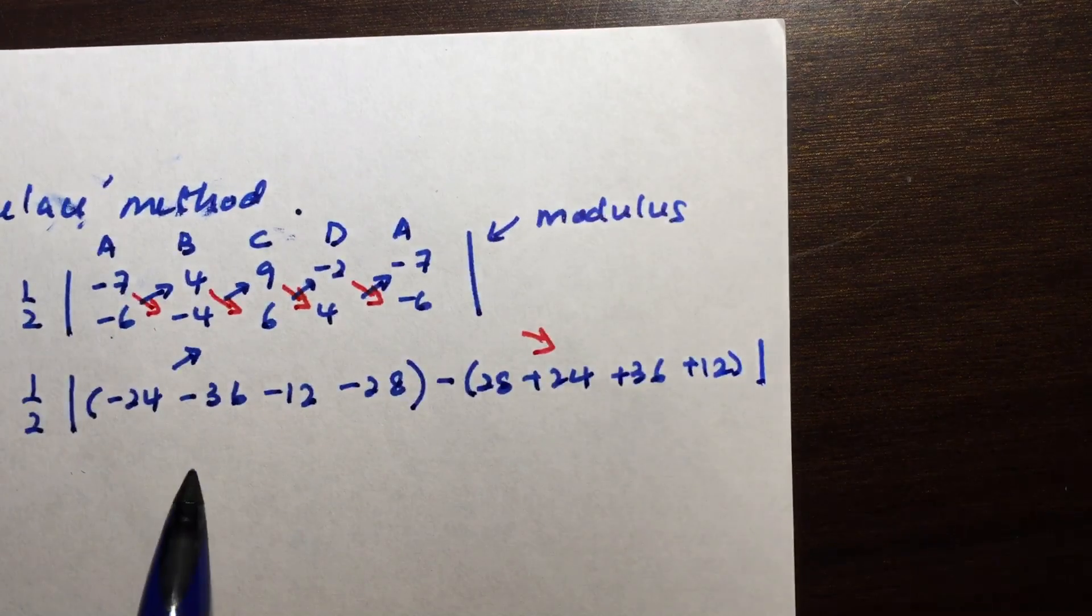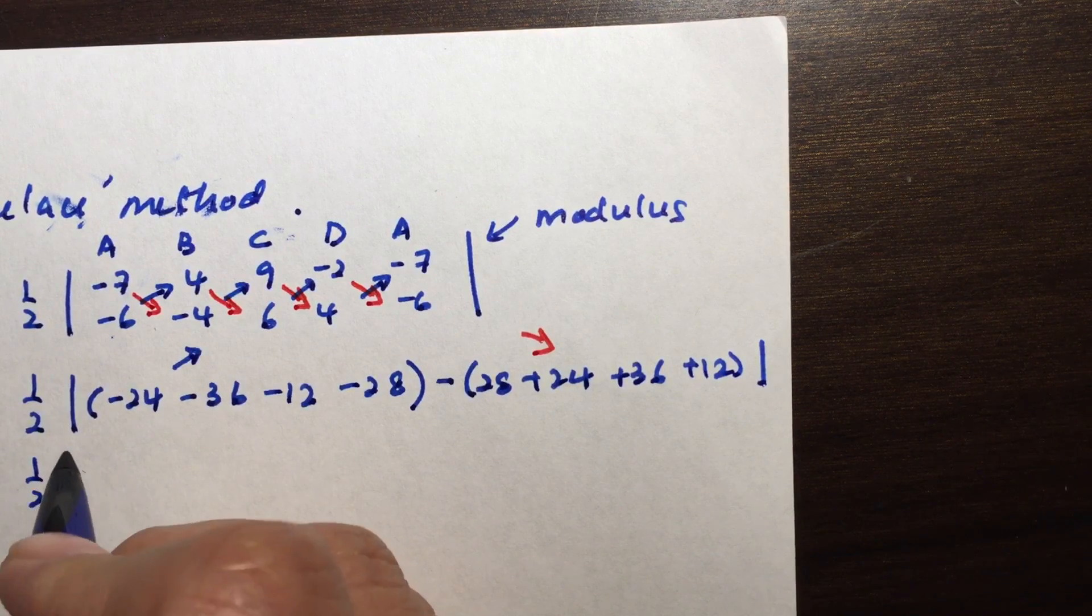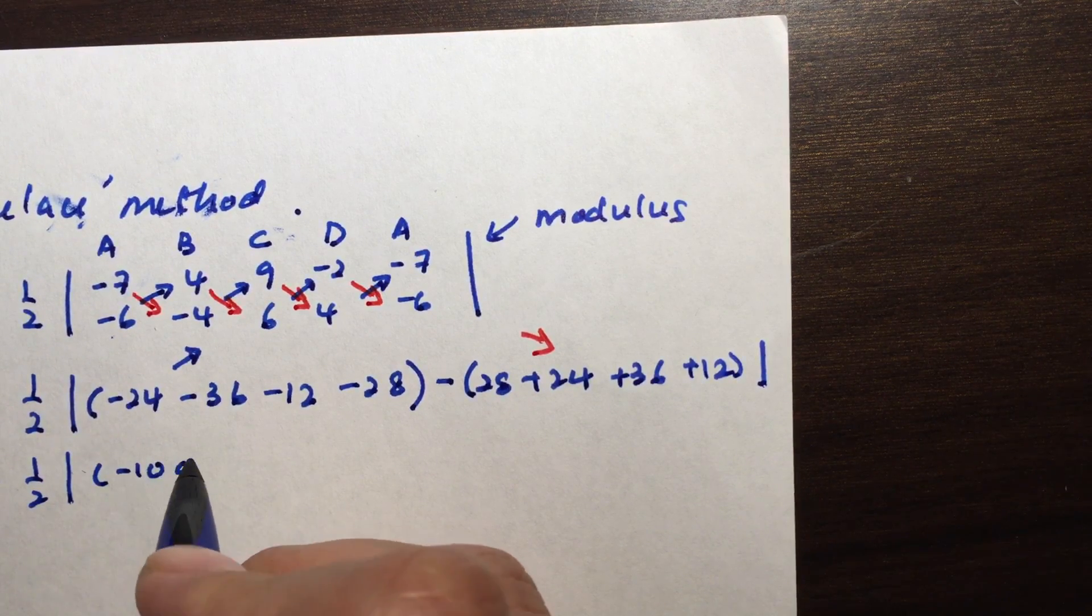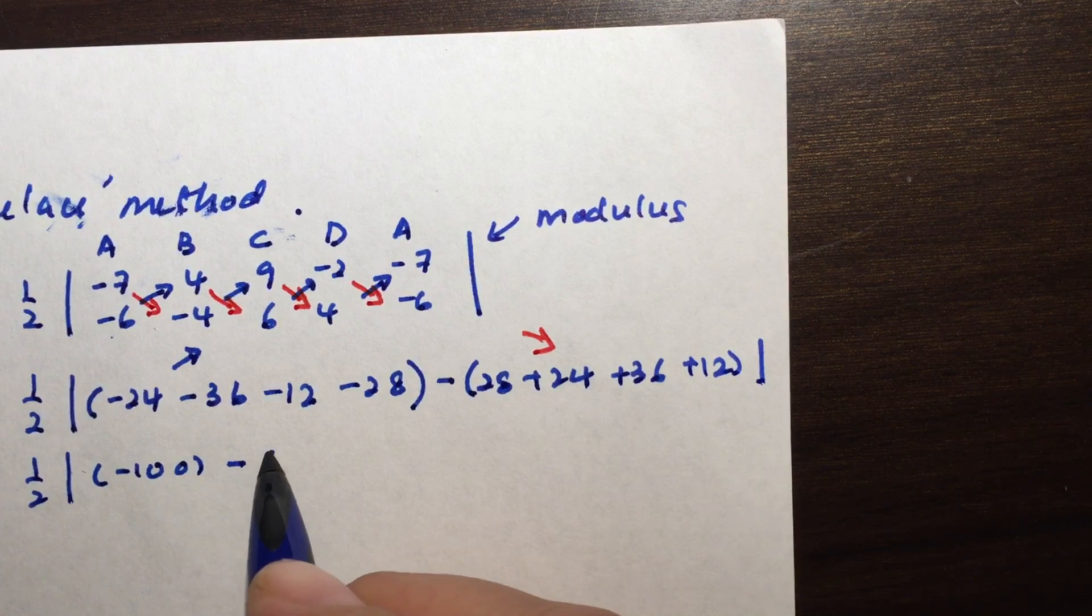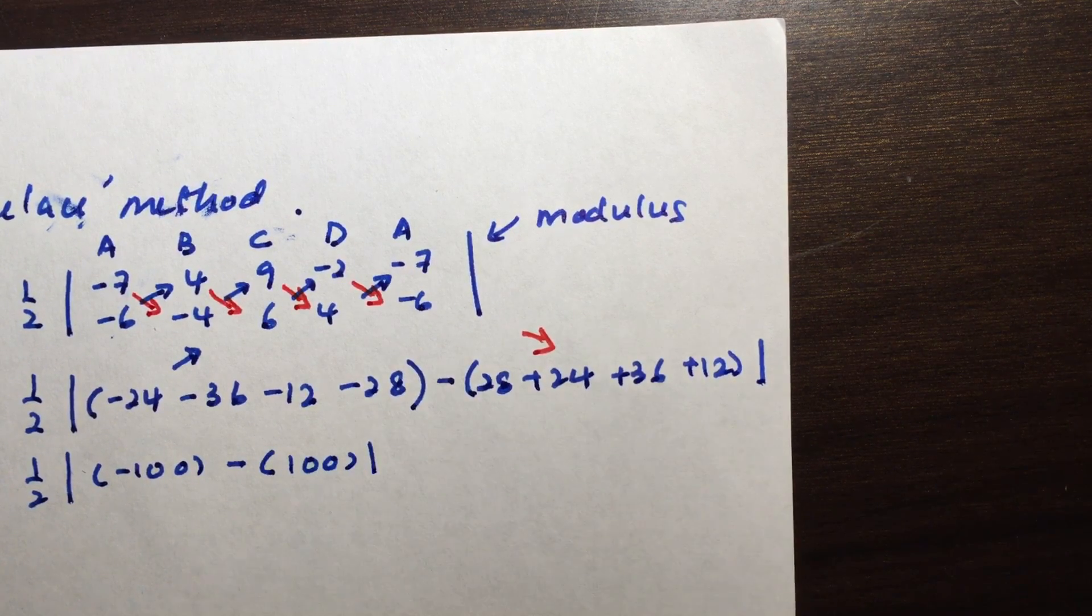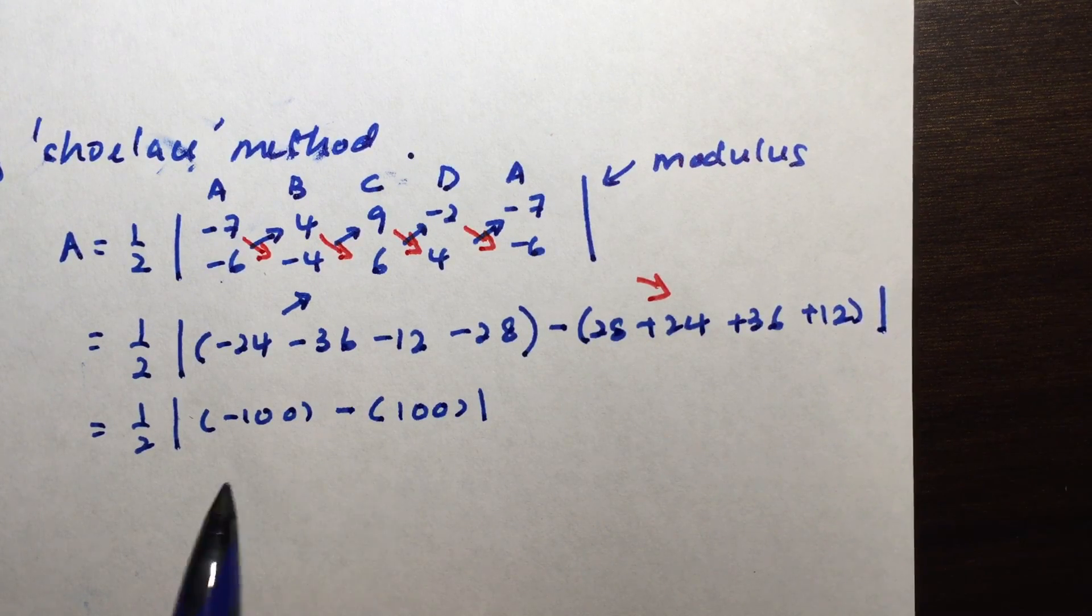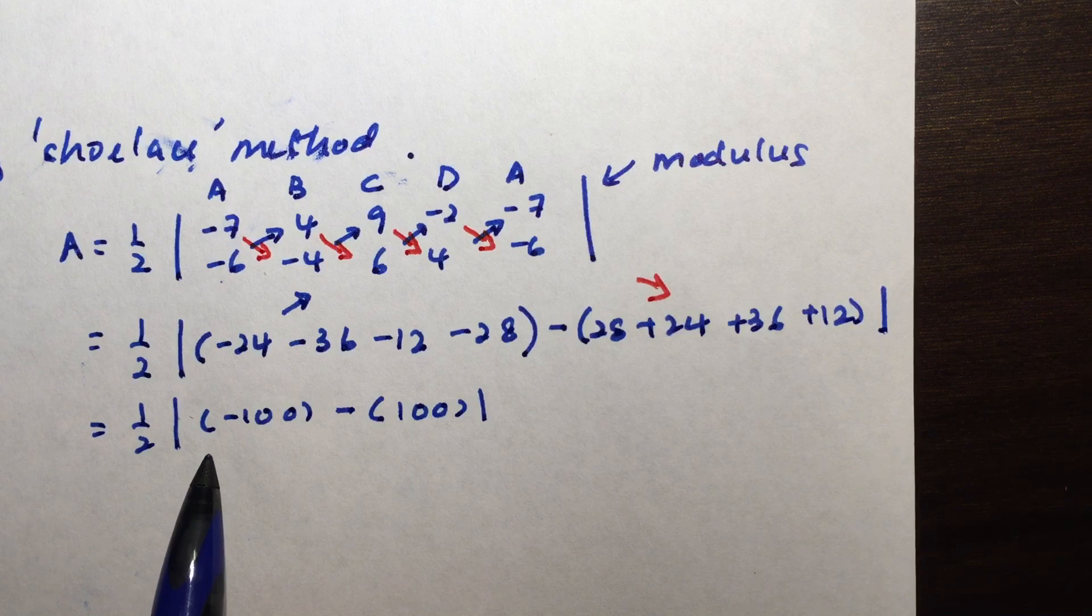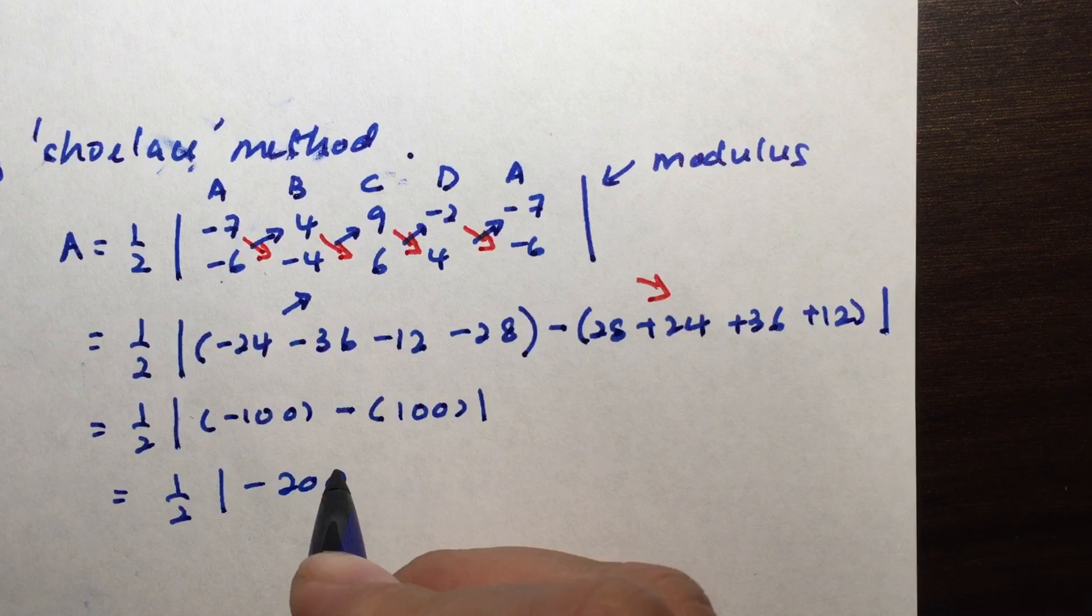What I'll do is tally up this group and I'll get it as negative 100, subtract this second group here is 100. Now please be careful, it's not going to give you a 0, otherwise there's no area. Negative 100 minus 100 is actually the same as negative 200.